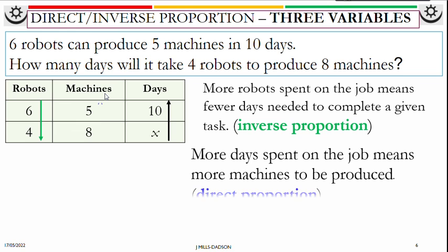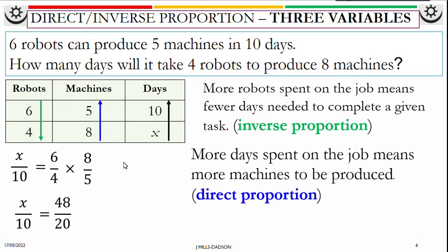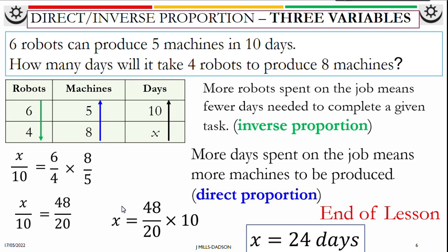Let's look at days and machines. More days spent on a job means more machines will be produced. If you spend more days producing, you will produce more machines. So that is direct. So days going up, machine must go up. Start the equation with the days because that's where the x is. x over 10 is equal to this one is going down so it should be 6 over 4. This one is going up so it should be 8 over 5. Then you work it out. 48 over 20 equals x over 10. Multiply both sides by 10. So x is equal to 24 days.